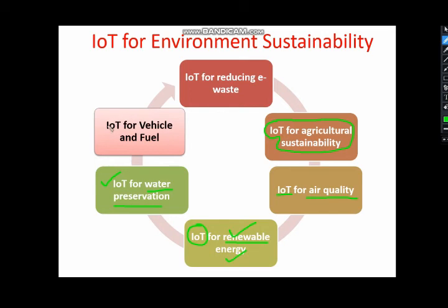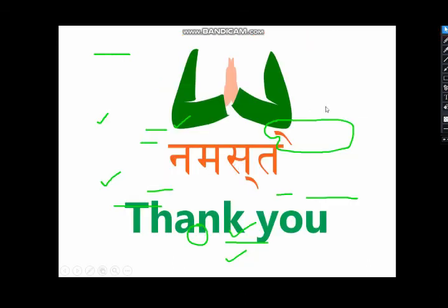Finally, IoT for vehicles and fuel — a lot of fuel emissions are generated through vehicles. If we move toward e-vehicles, solar-powered vehicles, and wind energy vehicles, it can have a huge positive impact on our environmental sustainability. The learning outcome from this FDP is that a lot of negative impact on the environment can be reduced and we can make it sustainable. IoT is one key enabler and can play a big role in that.